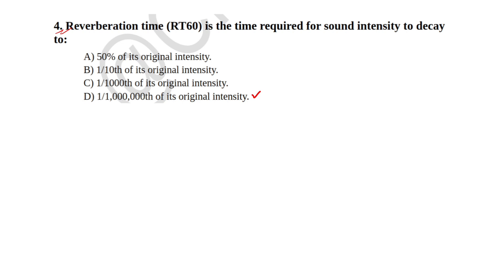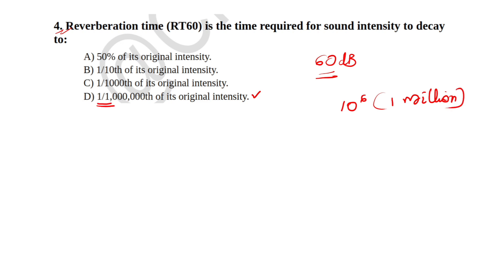That is the reverberation time, RT60. It is the time it takes for the sound intensity to decay by 60 decibels. A decrease of 60 dB corresponds to a decrease in intensity by a factor of 10 to the power of 6 — that is, one-millionth. So the answer is Option D, one-millionth of its original intensity. That is the reverberation time — the amount the original intensity decays to after the reverberation time.